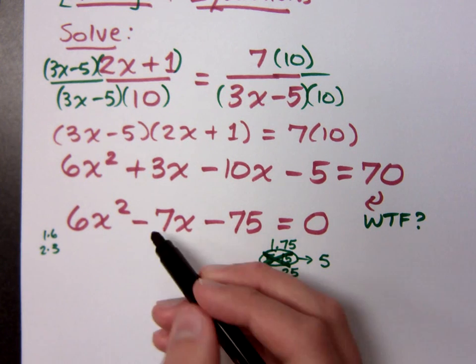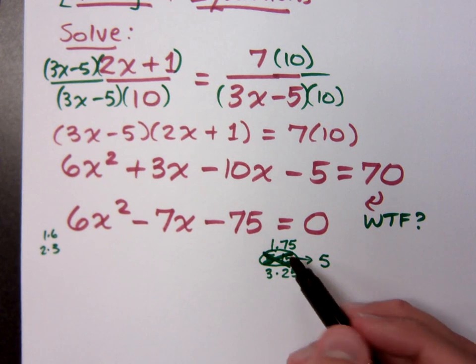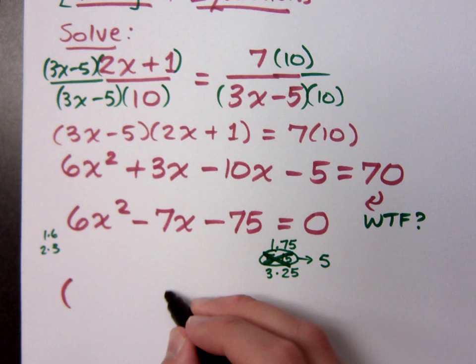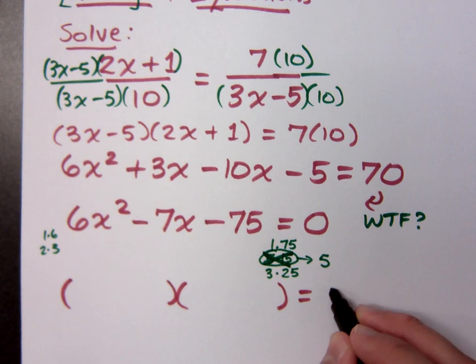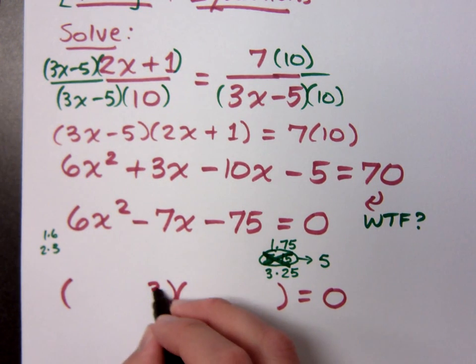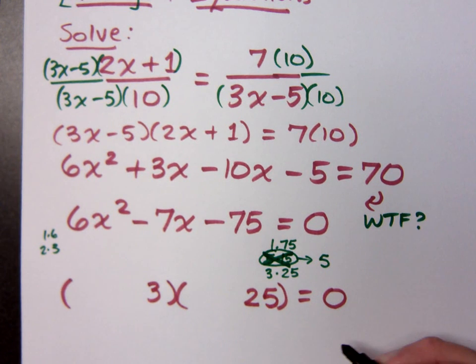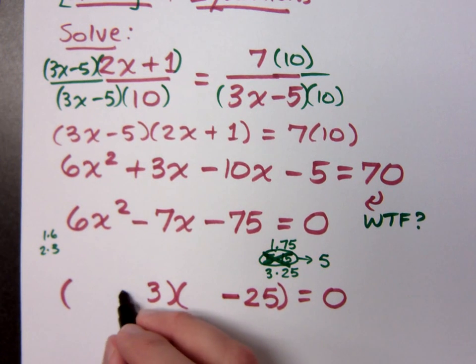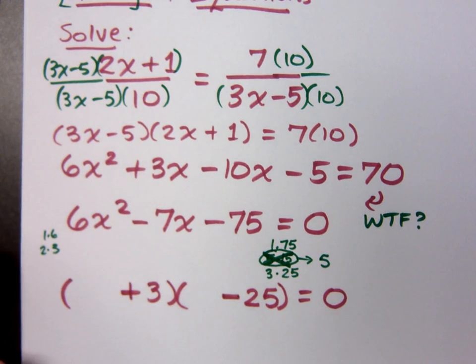You need smaller numbers to get this smaller number. If you use 1 and 75, you're going to exceed the 7 all the time. So I'm going to use 3 and 25. What do you know about your signs? One positive, one negative, but maybe we don't know exactly which one is going to be positive or negative. We see if that works out.